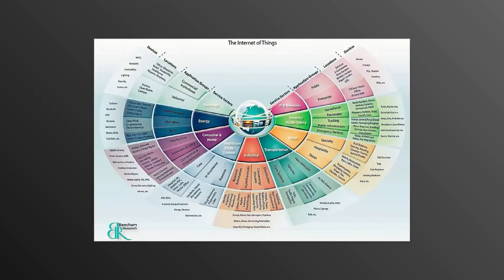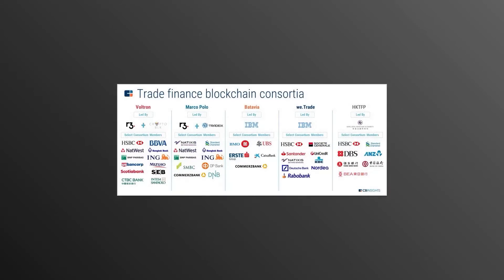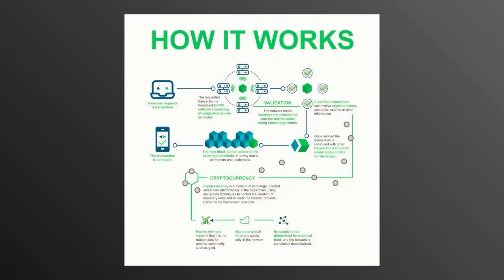Blockchain was first outlined in 1991 by Stuart Haber and W. Scott Stornetta, two researchers who wanted to implement a system where document timestamps could not be tampered with. Stornetta's main product is called Absolute Proof — a cryptographically secure seal on digital documents. Clients use Surety's Absolute Proof software to create a hashed digital document, which is sent to Surety's servers where it is timestamped to create a new seal. This seal is a cryptographically secure identifier that is returned to the software and stored for the customer.